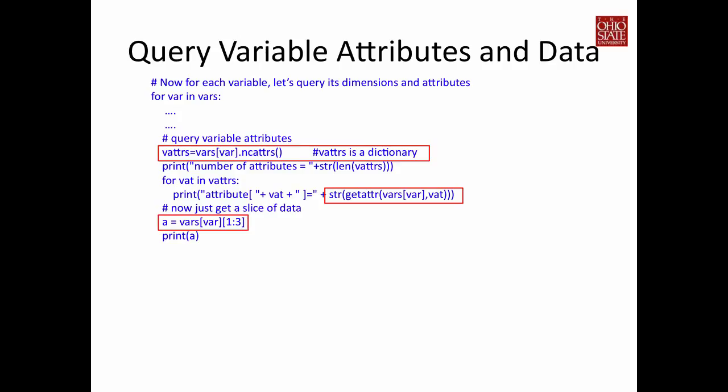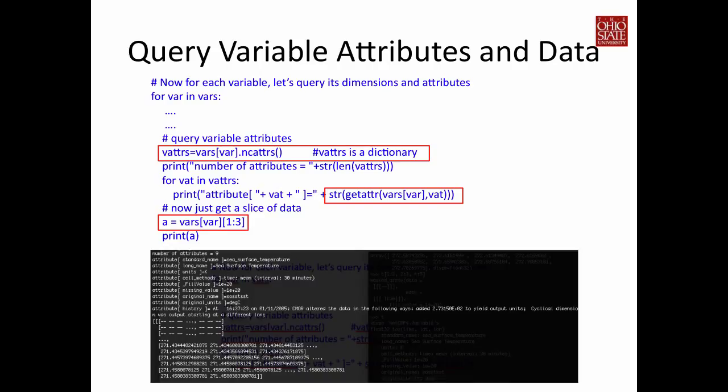You can also slice the data. The way to get the data from the variable is to query the dictionary — vars with the key var — and it returns an array that you can then slice. For example, you can slice from index 1 onward and assign it to variable a. This concludes the overview for using Python to access NetCDF data. I hope you find it useful.